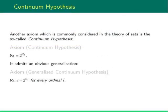Another axiom which is often discussed is the so-called continuum hypothesis. In the plain form, it asserts that aleph 1 equals 2 to the aleph 0.